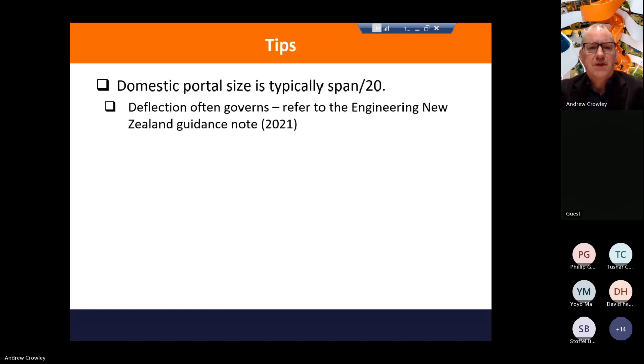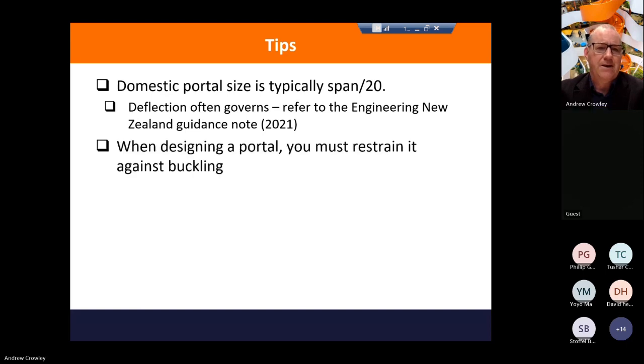Better still just to bolt at the points of contraflection as well. So tips: the domestic size portal frame is usually span over 20. So the depth of the section is the 20th of the span of the frame. We did a check on the strength of the portal frame, but usually these frames are determined by deflection and deflection will govern as well.